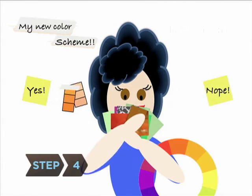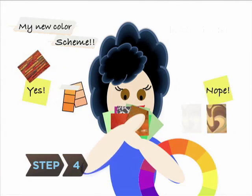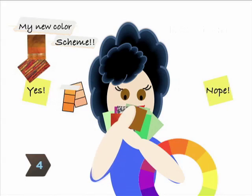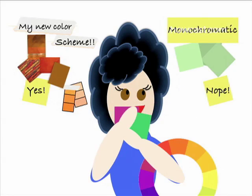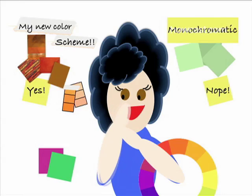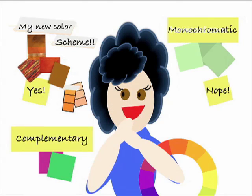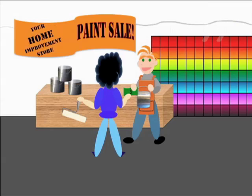Step 4. Choose your favorite coordinating items and decide on a color scheme. Monochromatic uses various shades of the same color. Complementary uses two colors opposite each other on the wheel.